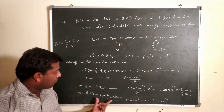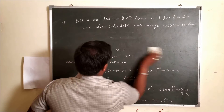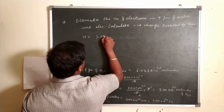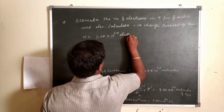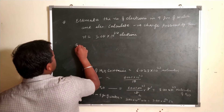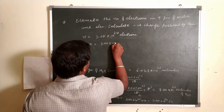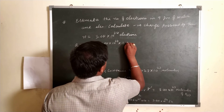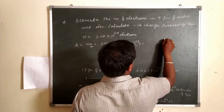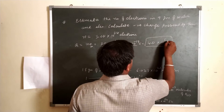So the number of electrons in 9 grams of water is 3.011 × 10²⁴ electrons. For the second part, we calculate the negative charge: Q = n×e = 3.011 × 10²⁴ × 1.6 × 10⁻¹⁹. The powers give 10⁵, and 3.011 × 1.6 ≈ 4.81. So the negative charge is approximately 4.81 × 10⁵ Coulombs.